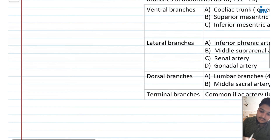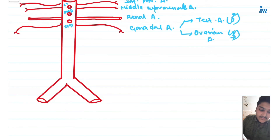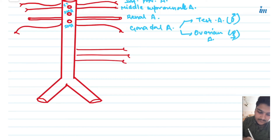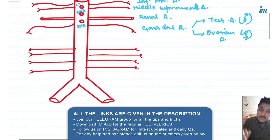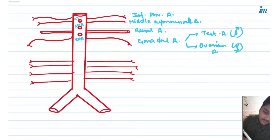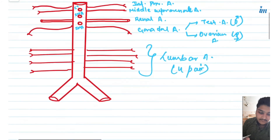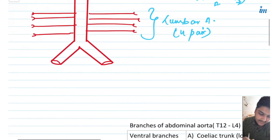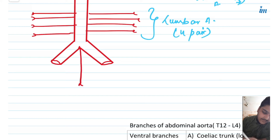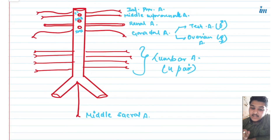Now for the dorsal branches — among the dorsal branches we have four pairs of lumbar arteries, and each one divides into an anterior and a posterior division. Another dorsal branch is the middle sacral artery, also called the median sacral artery. The important point is that it is the only unpaired dorsal branch. The middle sacral artery can sometimes give rise to the fifth lumbar artery.